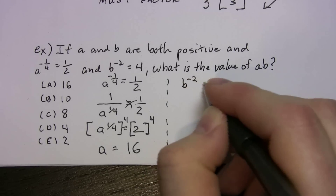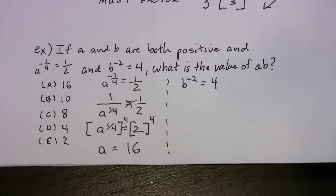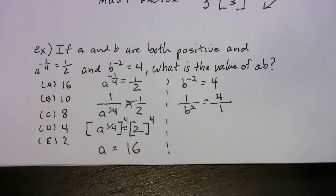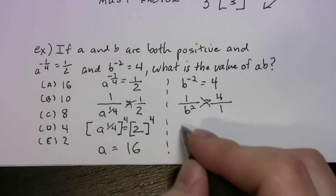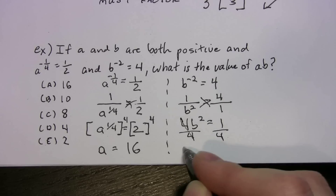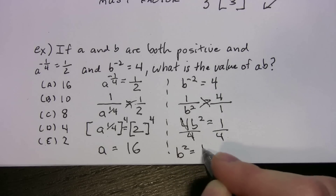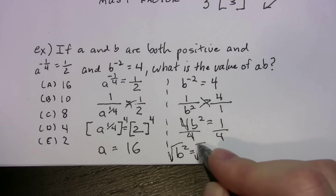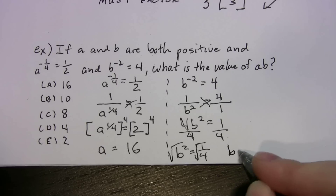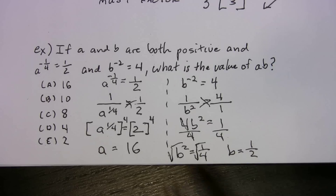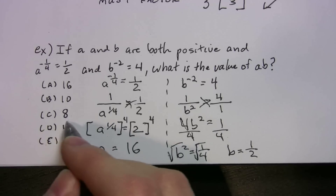Now find b. Rewrite b to the negative two equals four as one over b squared equals four over one. Cross multiply: four b squared equals one. Divide both sides by four to get b squared equals one-fourth. Take the square root of both sides, and b equals one-half — since a half times a half gives you a fourth. So if a is 16 and b is one-half, ab equals 16 times one-half, which is eight.